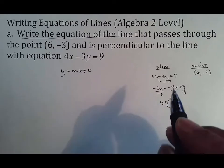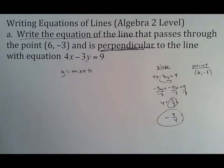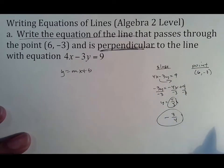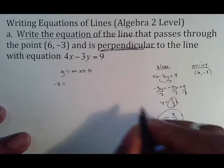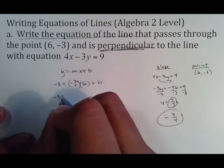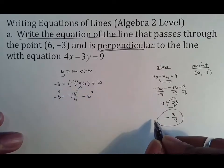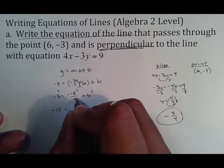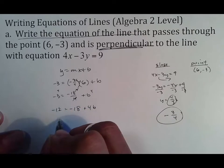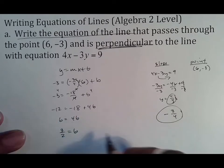But our line must be perpendicular to slope 4/3, so I don't want 4/3 — I want −3/4. Now plug into y = mx + b: m = −3/4, y = −3, x = 6. So −3 = (−3/4)(6) + b, which gives −3 = −18/4 + b. Multiplying through by 4: −12 = −18 + 4b. Add 18: 6 = 4b, so b = 6/4 = 3/2.